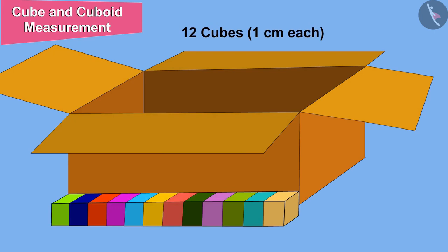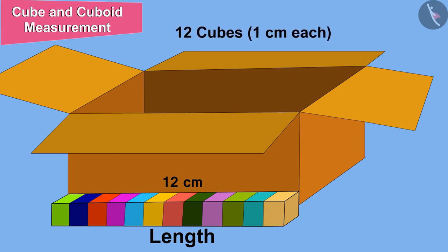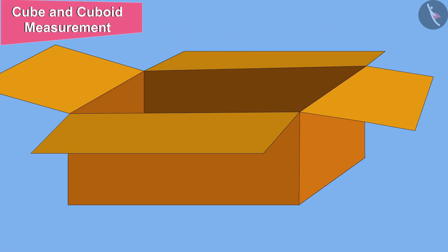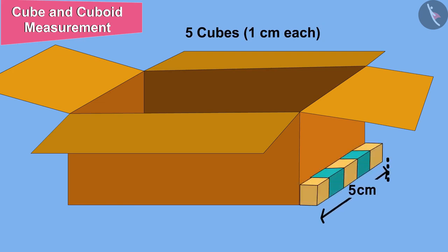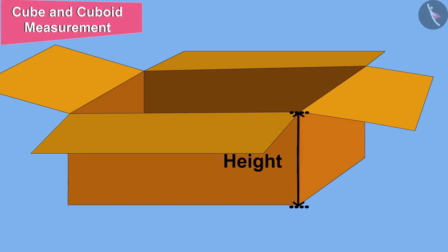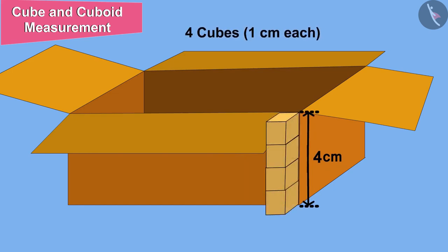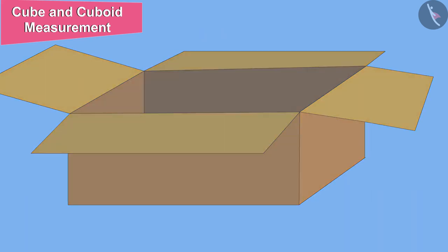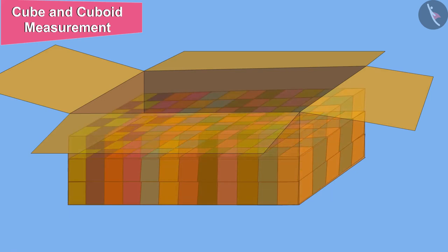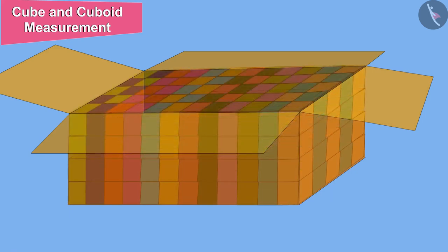There are 12 cubes of dimension 1 cm each in the length of the cuboid-shaped box. That means the length of the cuboid-shaped box will be equal to 12 cubes of dimension 1 cm each. In the same way, the width of the cuboid-shaped box is 5 cm, which will be equal to 5 cubes of dimension 1 cm each. And the height of the cuboid-shaped box is 4 cm, which will be equal to 4 cubes of dimension 1 cm each.